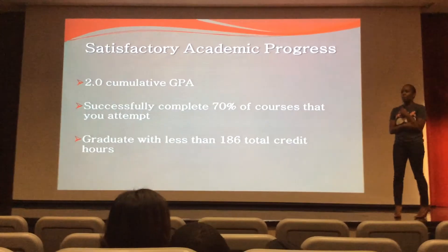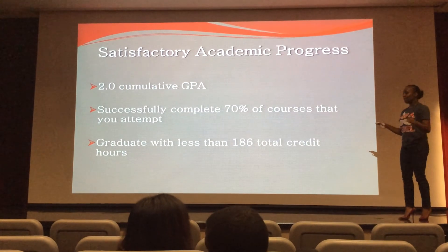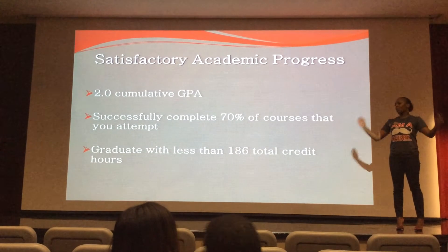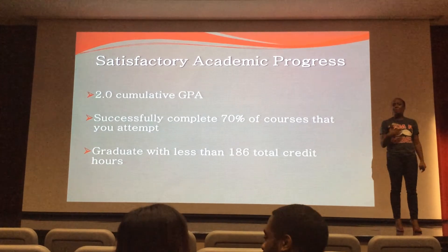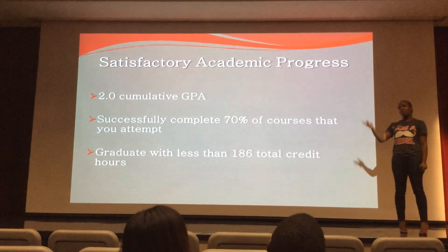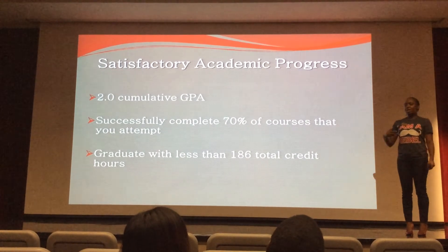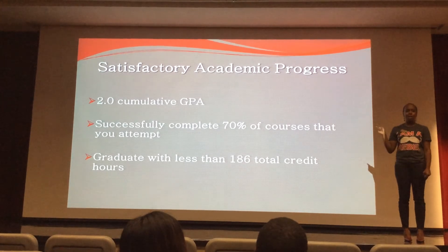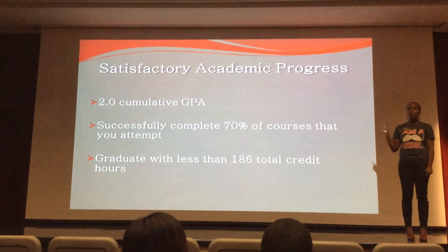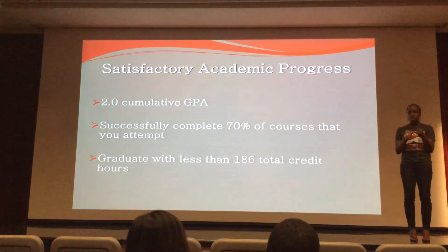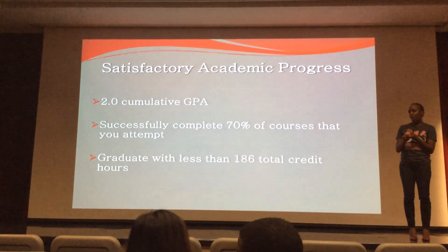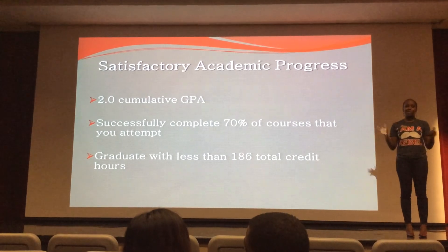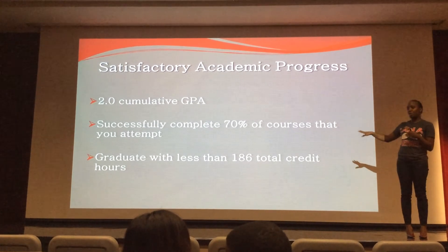The last standard is the 186 credit hour limit. If your student is constantly changing majors, adding and dropping minors, or taking random classes not working toward a degree, it is very easy to approach 186 credits without being ready to graduate. Changing majors multiple times, adding a double major, adding a minor — all of those decisions impact eligibility for federal aid, so it's important to have those conversations with your student.